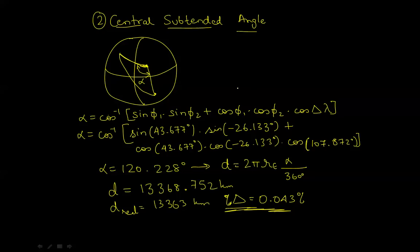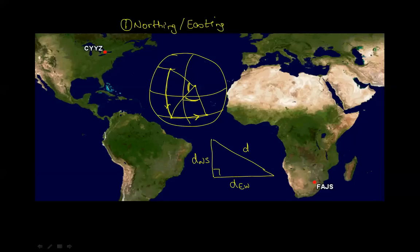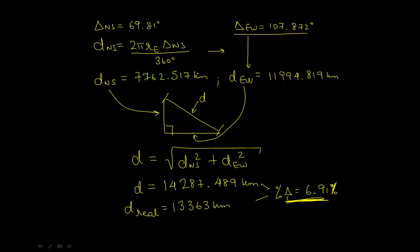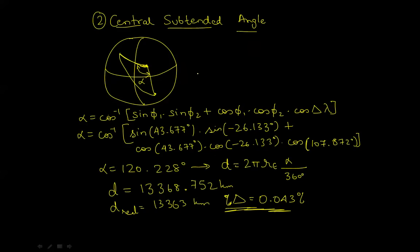As you can see, there are two methods. One, the Northing and Easting, and two, the central subtended angle method. The central subtended angle method, because it does not flatten this triangle, it simply calculates that central angle right there, is a much more accurate method of calculating great circle distances. In short, this is how you calculate great circle distances. I hope you enjoyed watching this video. There'll be more coming up. Thank you.